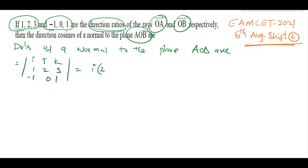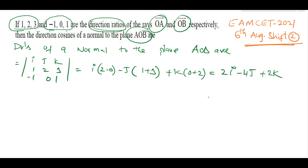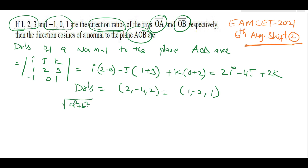This gives i(2−0) − j(1+3) + k(0+2) = 2i − 4j + 2k. So direction ratios are (2, −4, 2), which simplifies to (1, −2, 1).